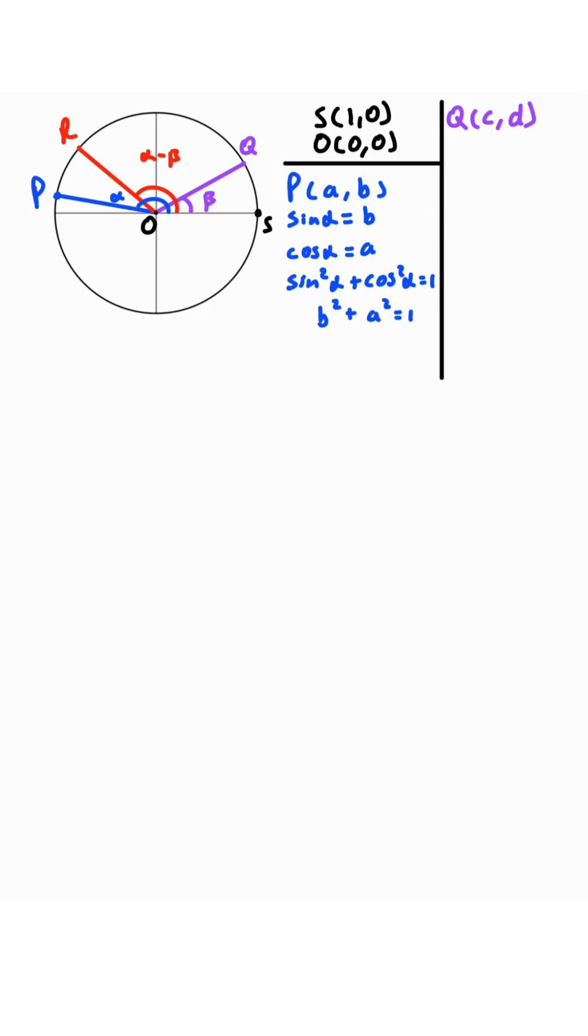Now, suppose we have point Q located at (c,d). By the same logic as the blue, sine of beta is equal to d, cosine of beta is equal to c, d squared plus c squared is equal to 1.